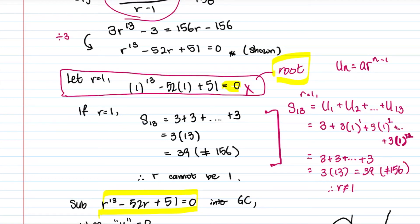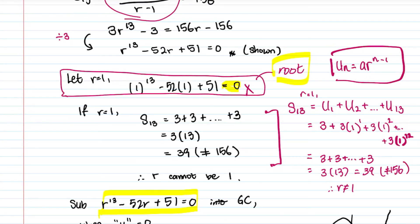I wanted to clarify this because during post-editing I felt my explanation wasn't clear enough. This is always how APGP works: add up all the different terms, and since uₙ = ar^(n−1), substituting r=1 gives only threes — three plus three plus three all the way — which totals 39, not 156. That confirms r cannot be 1.